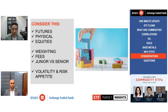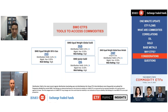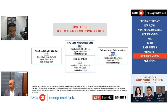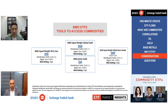To wrap up, here are the BMO ETFs that offer exposure to the commodities we discussed today. ZEO is the Equal Weight Oil and Gas ETF, which holds oil and gas equities in an equal-weight manner, offering better diversification across companies. ZGD takes a similar equal-weight approach and holds gold mining equities. ZJG is the junior version and is market cap weighted — those would be your more speculative names. Lastly, ZMT gives you exposure to different global base metals in an equal-weight fashion, hedged to the Canadian dollar.